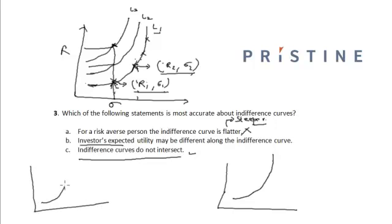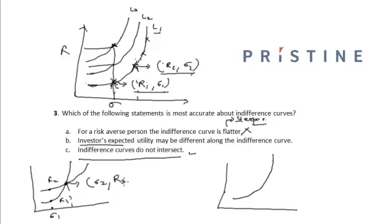Suppose we have indifference curve l1 and another indifference curve intersecting it. Let's say the intersection point has coordinates Sigma1, r1, and another point on l1 is represented by Sigma2, r3. Since both points lie on indifference curve l1, the investor is indifferent between (Sigma1, r1) and (Sigma2, r3).